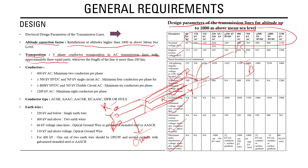Transposition into three approximately equal parts is required for AC transmission lines whenever the line length exceeds 100 km. For a 200-300 km line, transposition is done at 100 km intervals, dividing the line into two or three equal parts. This ensures that impedances are properly distributed and there is no significant voltage magnitude difference between the three phases when the line is energized.